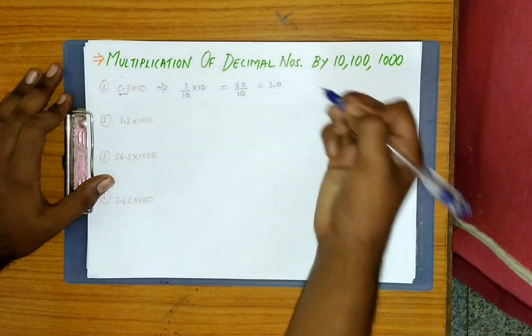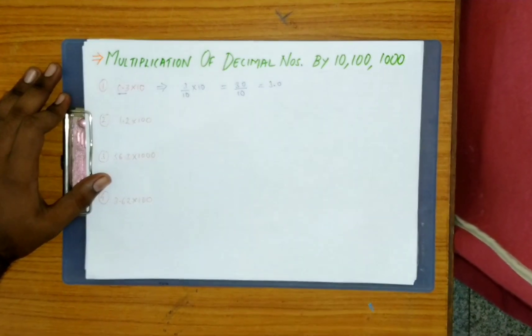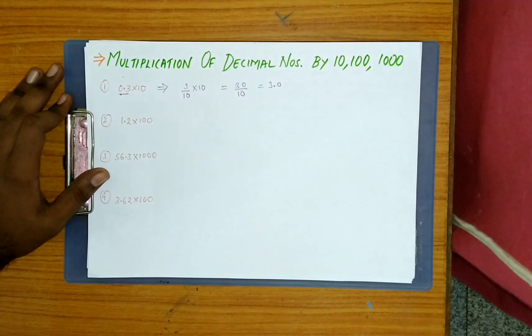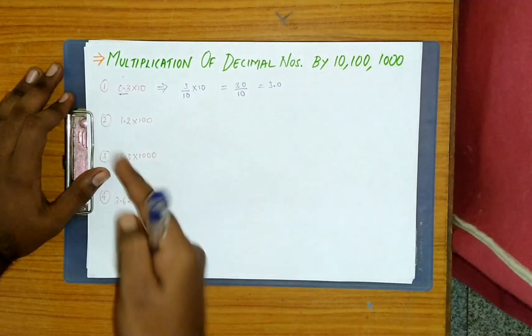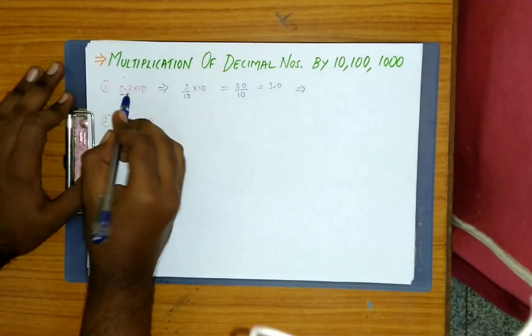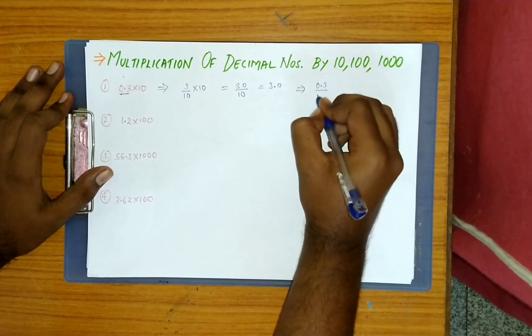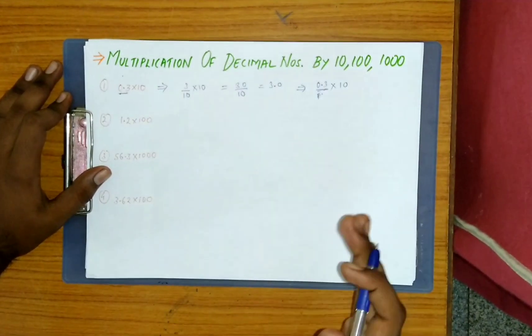Now how to proceed in the easier way? In just one step you can finish this answer. In multiplication, you have to remember the point jumps towards the right.